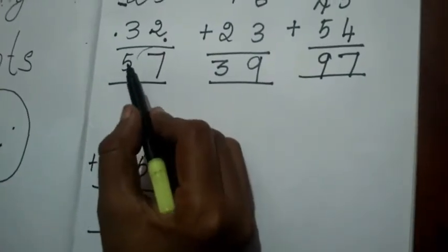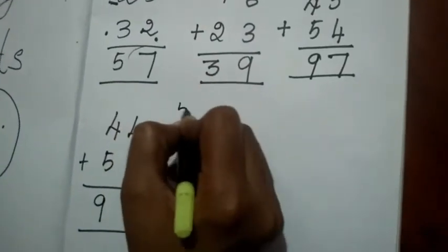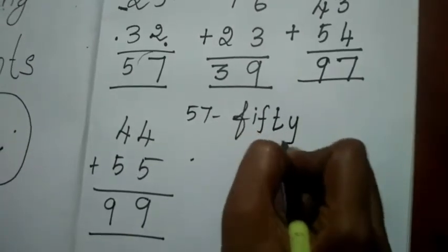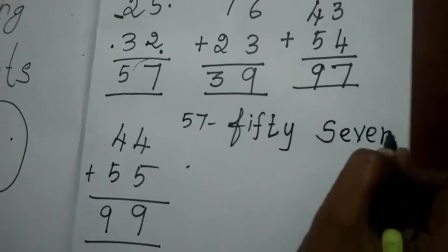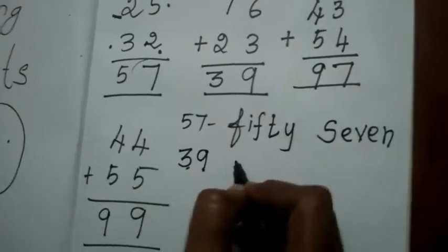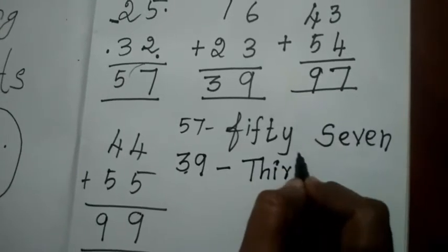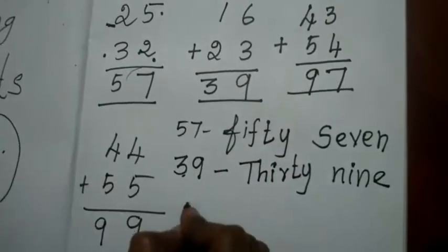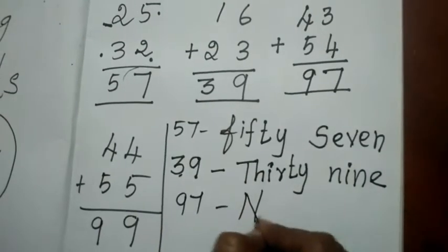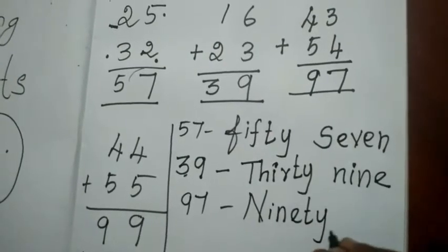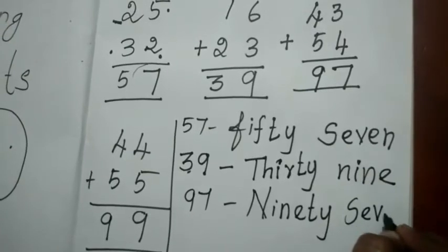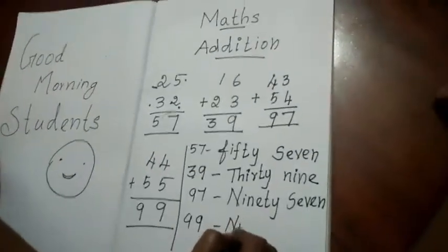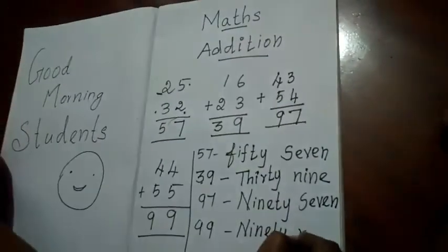First sum answer is 57 — write 57. F-I-F-T-Y S-E-V-E-N. Second sum answer is 39 — T-H-I-R-T-Y N-I-N-E. Third sum answer is 97 — N-I-N-E-T-Y S-E-V-E-N. Fourth sum answer is 99 — N-I-N-E-T-Y N-I-N-E. After completing every sum, you have to write the answer with the number name.